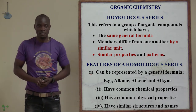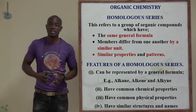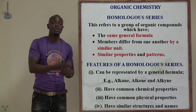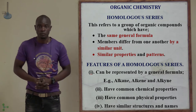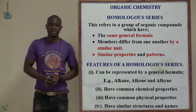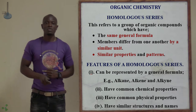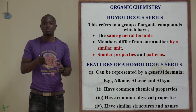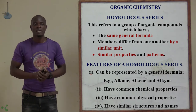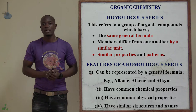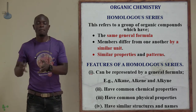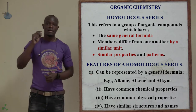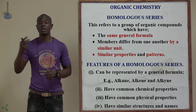Now let's look at the homologous series, whereby we also looked at homologous series in the periodic table and the chemical families in Form 2. So what are homologous series? This mainly refers to organic compounds that have the same general formula, where the members differ from one another by a similar unit, and they also have similar physical and chemical properties.